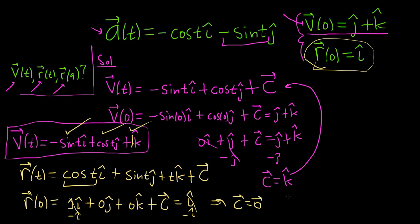So that means that r of t, I'll write it down here, I'll squeeze it in, is going to be cosine of t i hat, plus sine of t j hat, and plus t k hat. And the c is gone because the c is equal to 0. So that would be our position function.